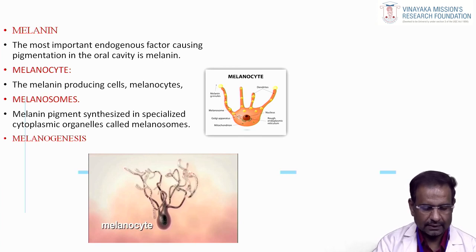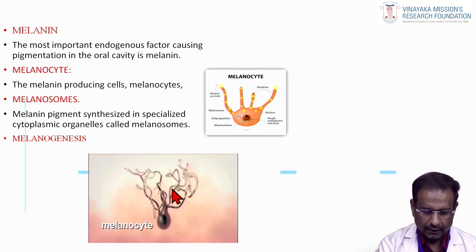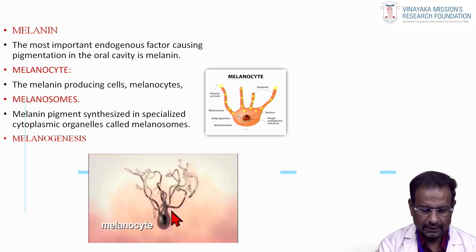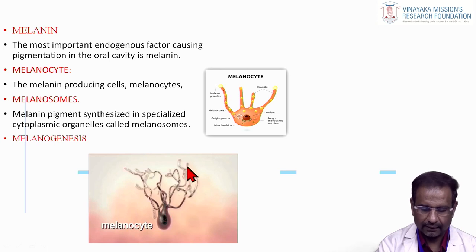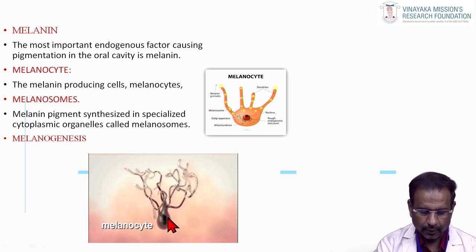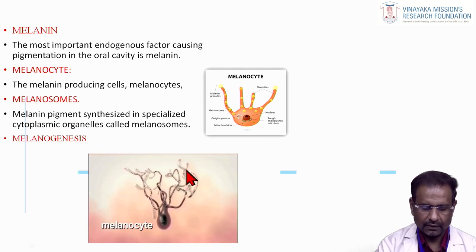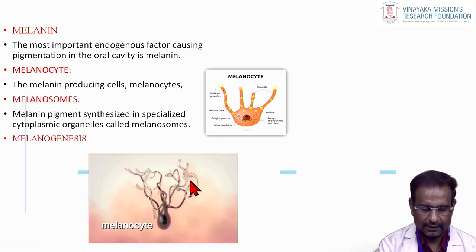The process by which melanin forms from melanocytes is called melanosomes. Melanocytes are octopus-like cells with a nucleus at the center. The melanin is produced in the nucleus and travels to the superficial layer through the tentacles — hand-like projections. That is how melanin is distributed.